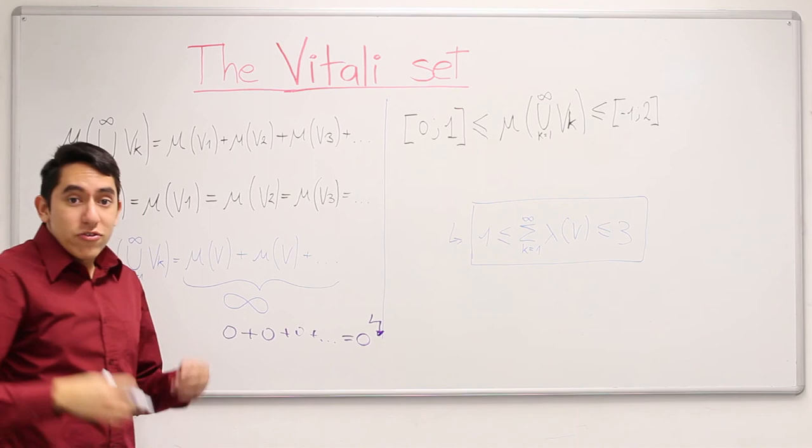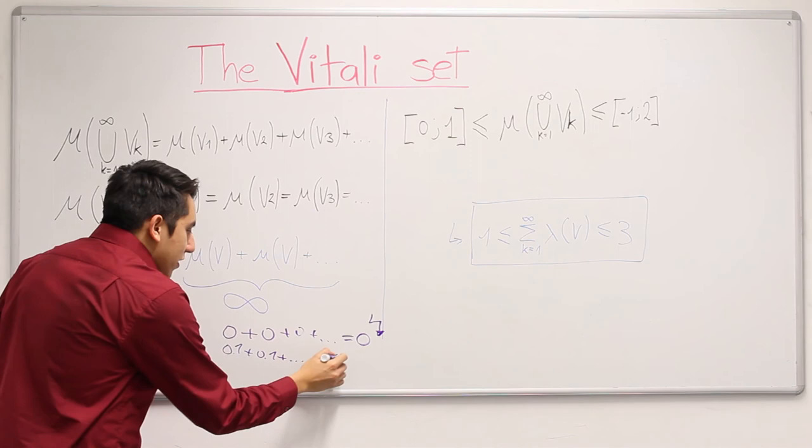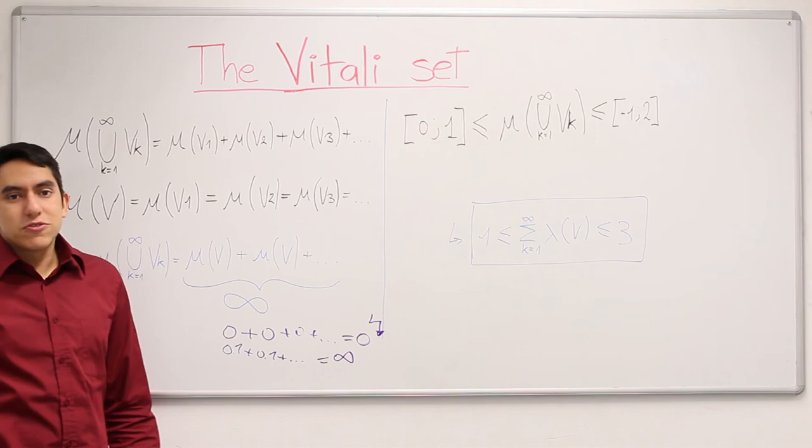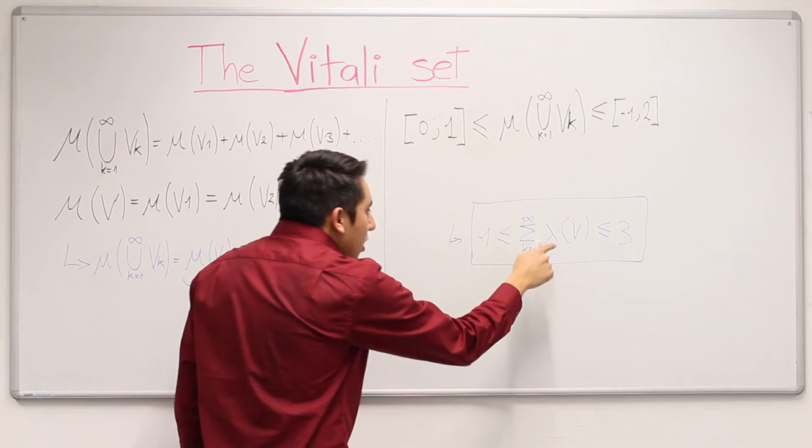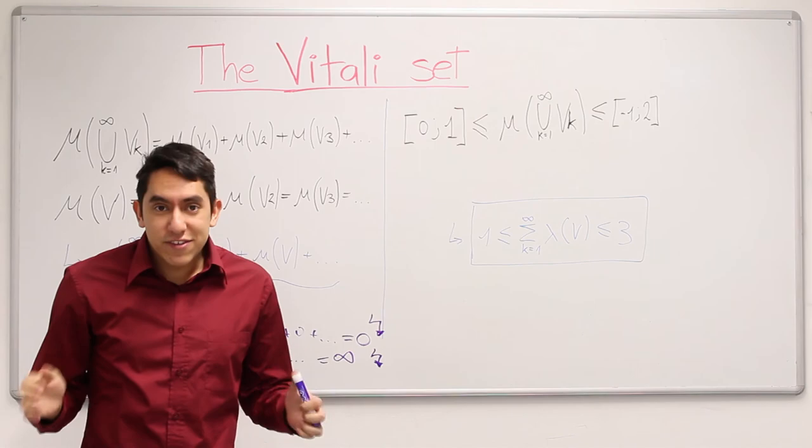There is only one chance. It has to be a positive value. Let's suppose 0.1. We add 0.1 infinite many times, and we get, as result, infinity. And the same if we choose 0.0001, it doesn't matter. We will get infinity. Infinity is not between 1 and 3, so we have another contradiction. So what can we do? There is only one answer. The Vitali set does not have a size.